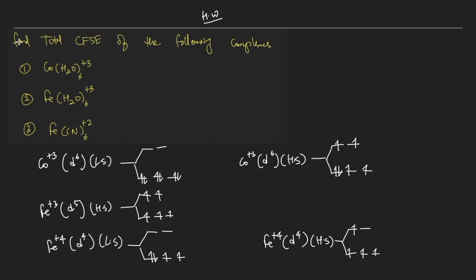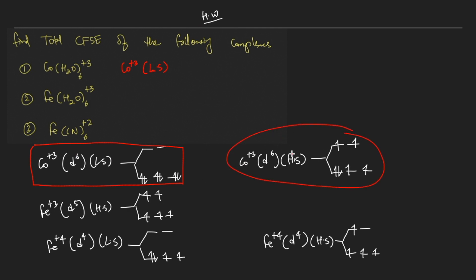The first complex has cobalt in the +3 oxidation state. I have always emphasized that cobalt in the +3 oxidation state with water, or with any oxygen or nitrogen donor ligand, forms a low spin complex — it is the property of the metal, not the ligand. Filling the electrons for Co³⁺ low spin and comparing with the high spin form, which already has one pairing, we find two extra pairings. The CFSE comes out to minus 2.4 ΔO plus 2P.